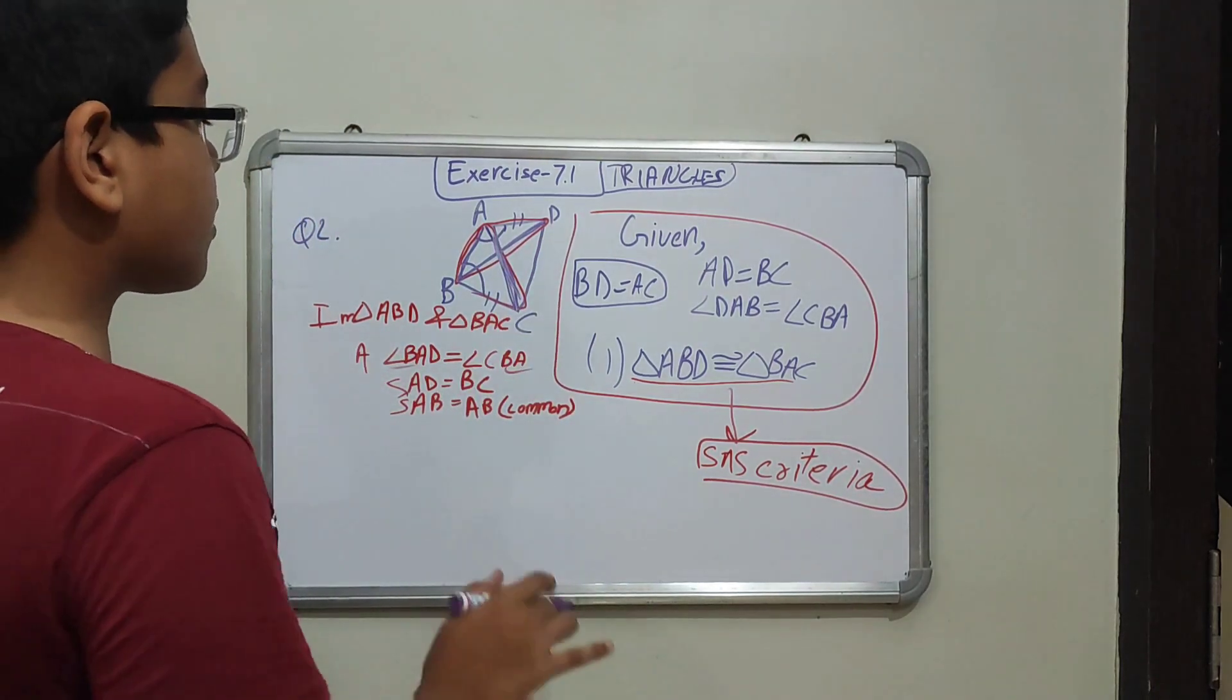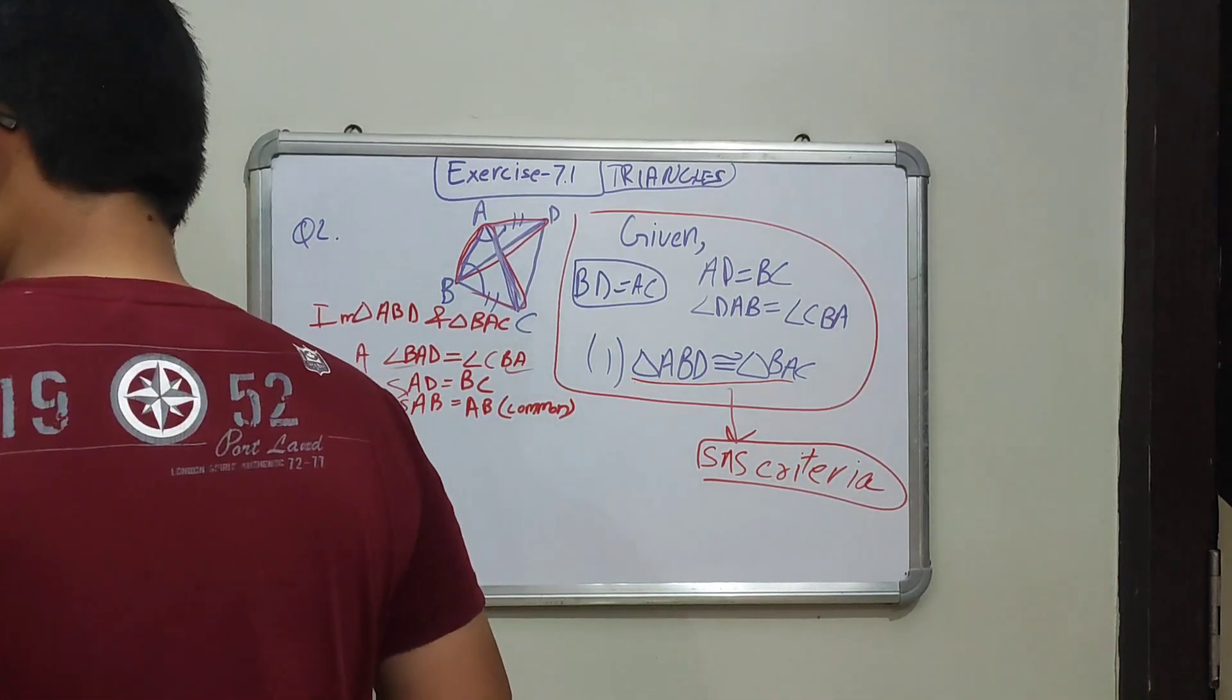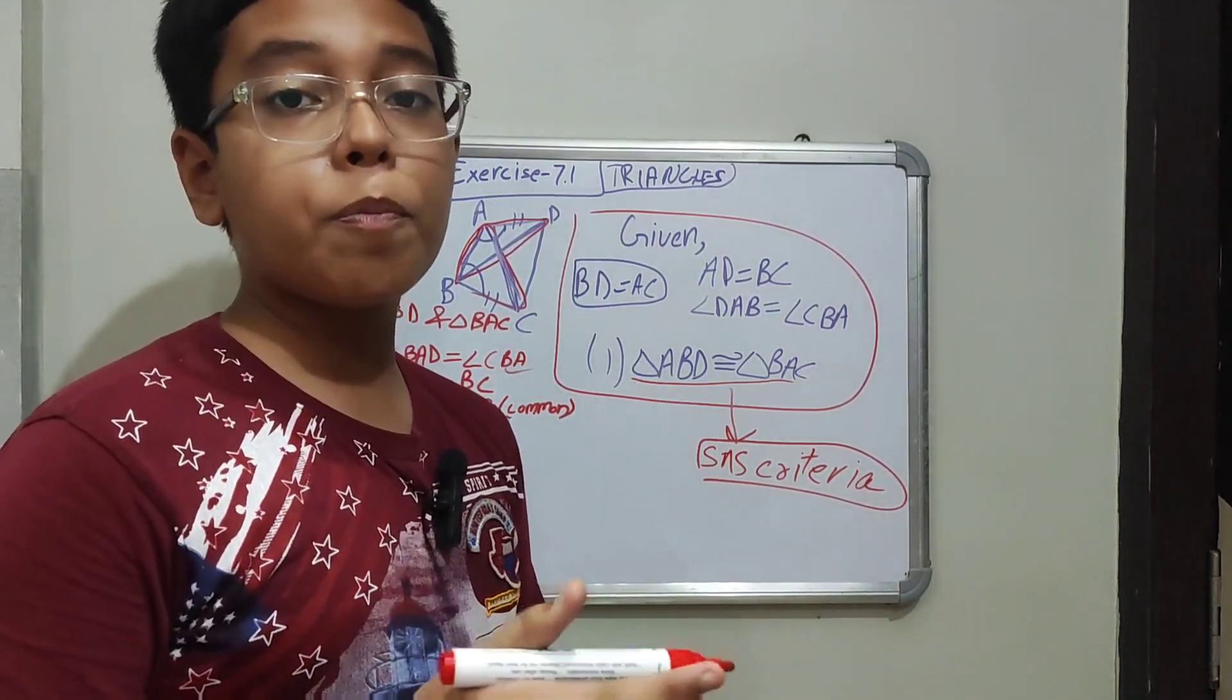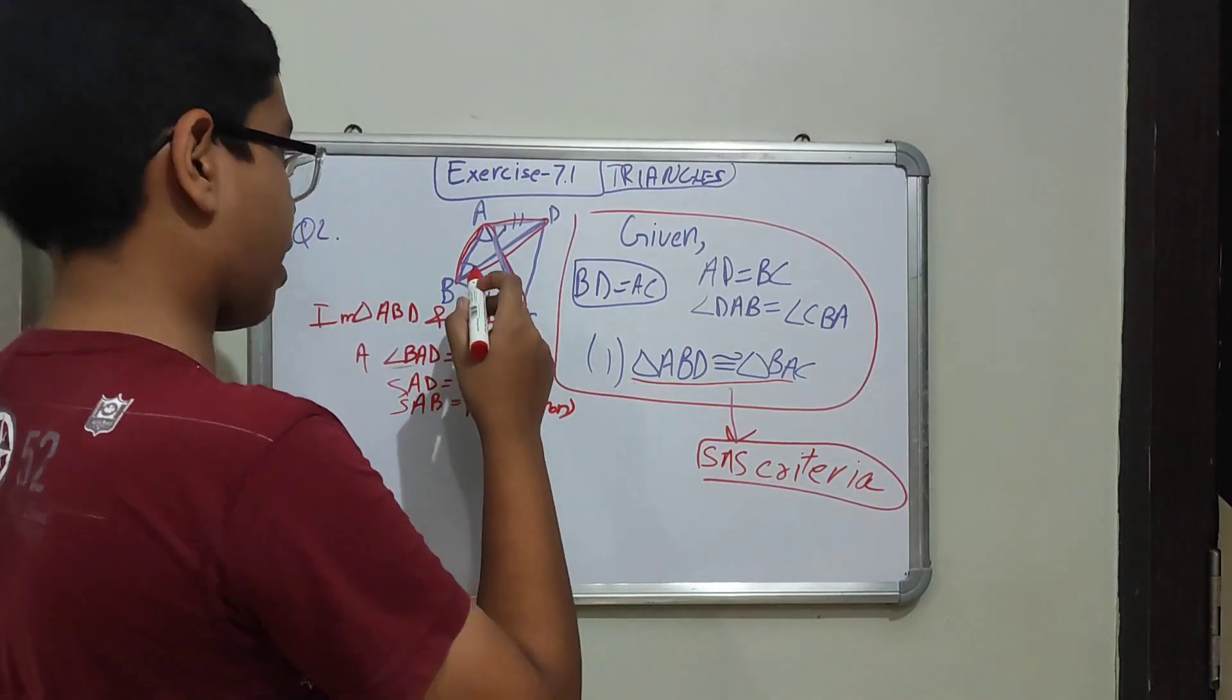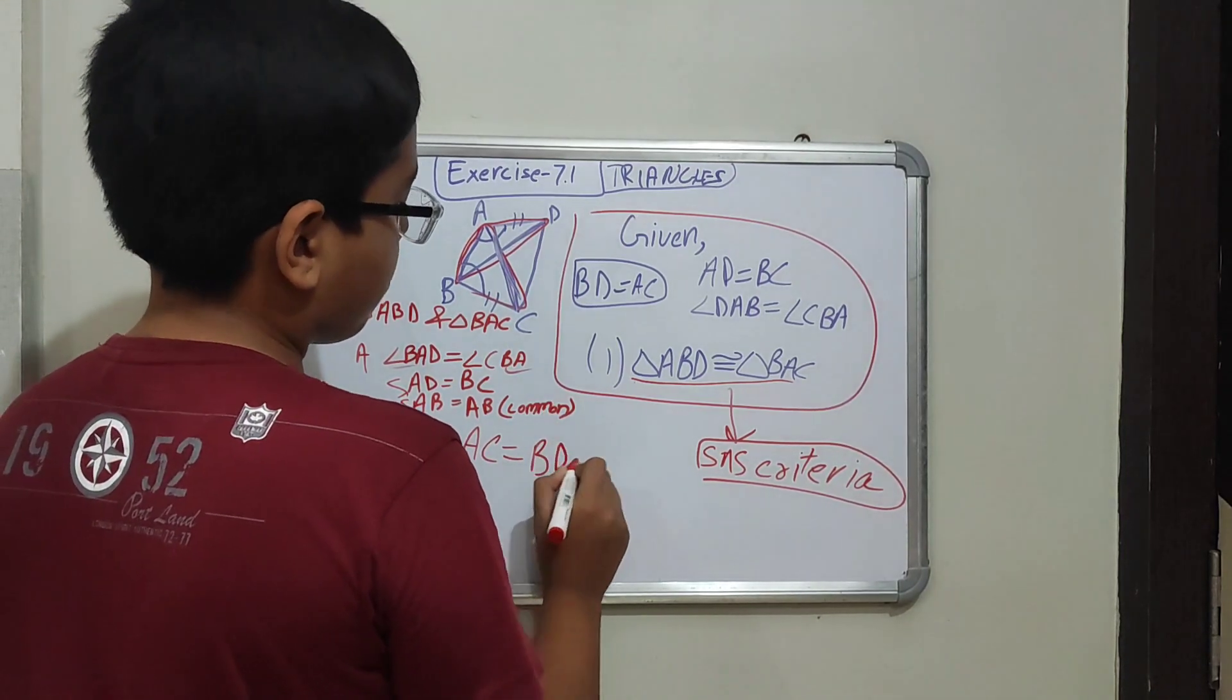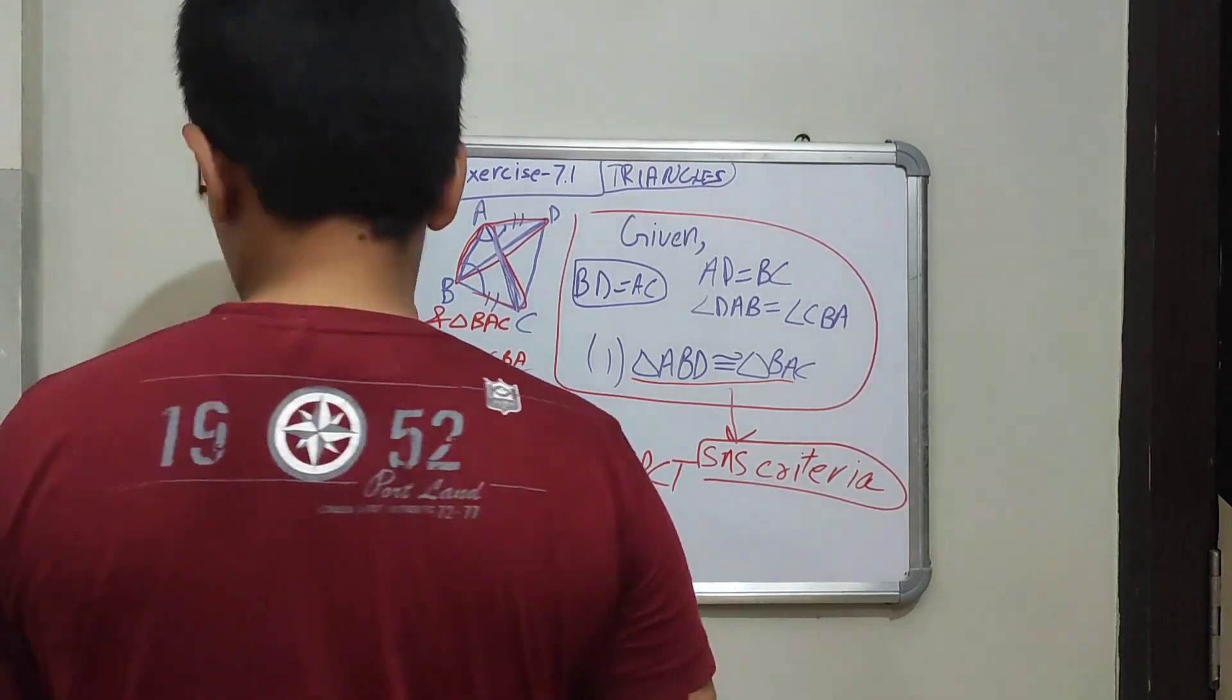So we have two triangles ABD and BAC. We need to prove that it is congruent. So I have told you about CPCTC - congruent parts of congruent triangles. So we can say that AC is equal to BD by CPCTC.